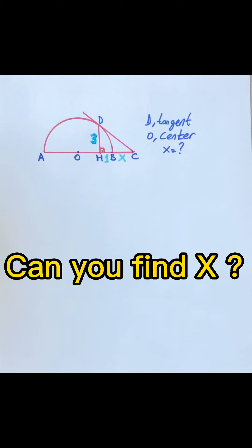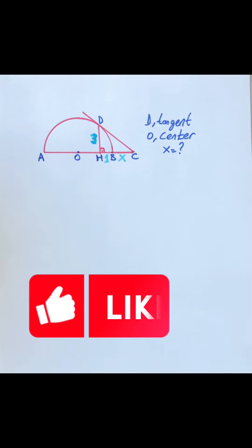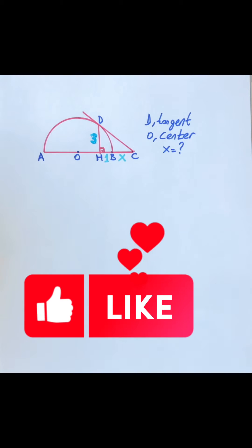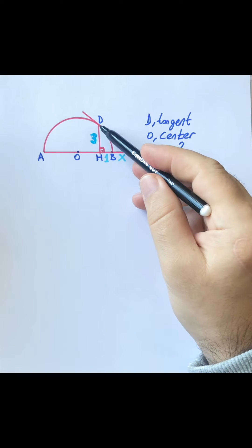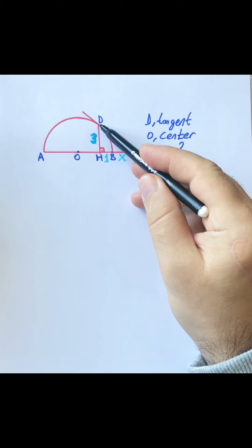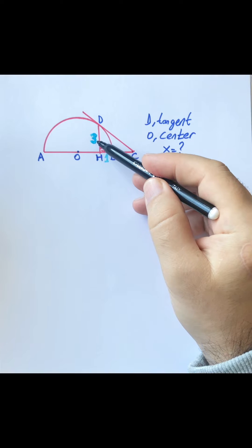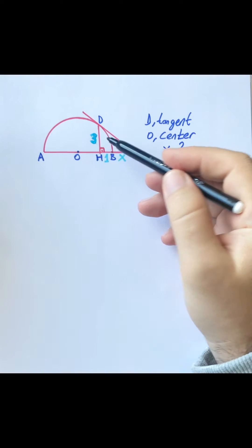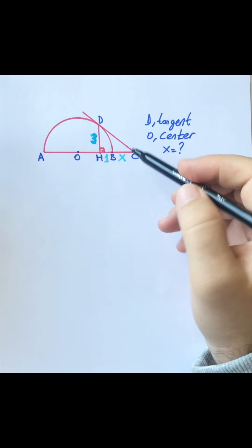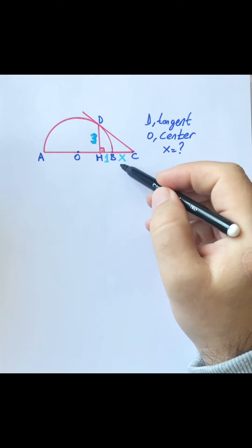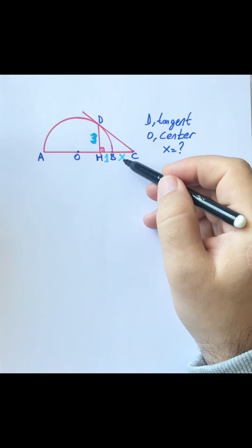Hello everyone, today we are going to calculate the value of x. D is the tangent point, DH is three units, HP is y units, BC is x units. So what is x?